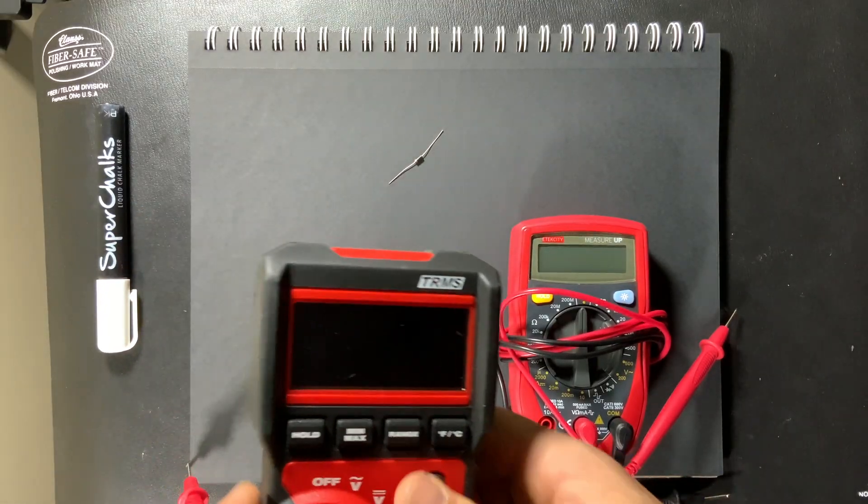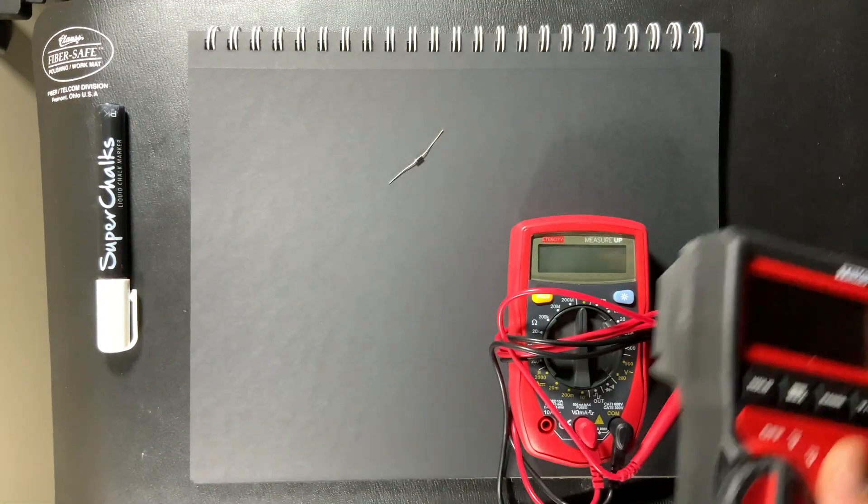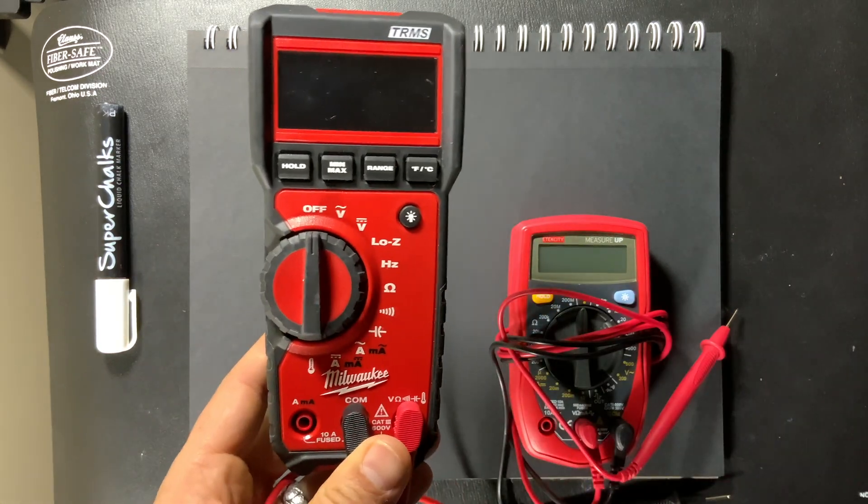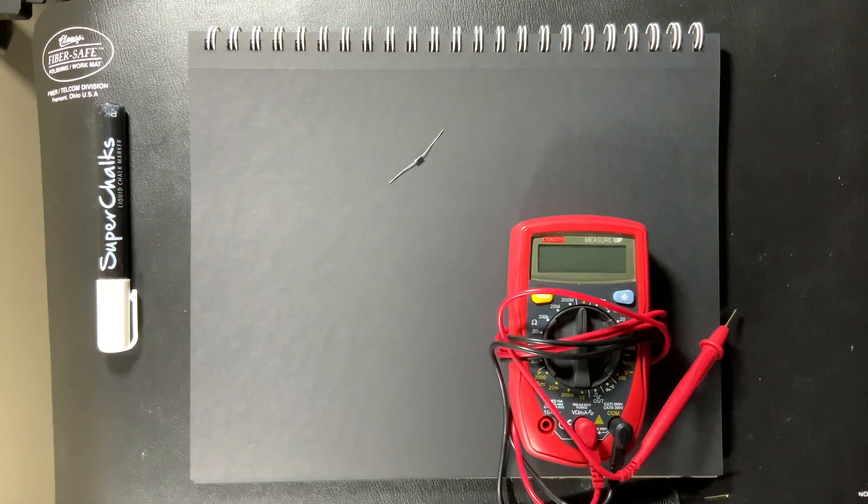So I happen to have two meters on me. I have this Milwaukee here. And if I look at the dial I don't see anything too helpful. And you know what? Get rid of it.